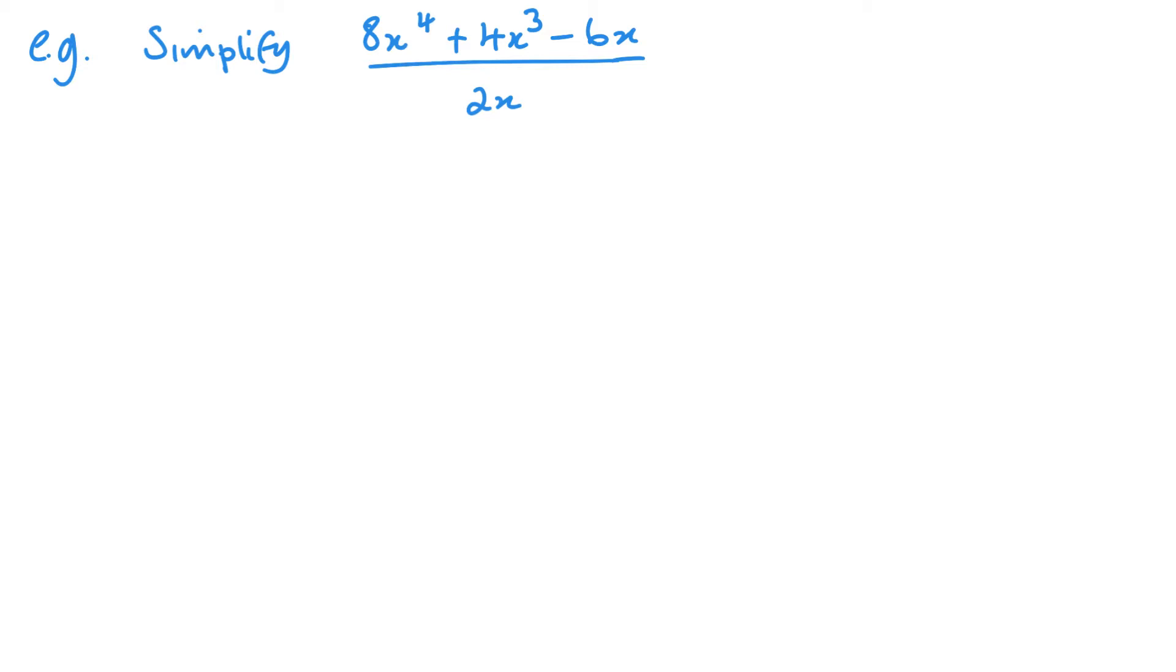So we have a question here: 8x to the power 4 plus 4x cubed minus 6x over 2x. I can see straight away on the top that I can take an x outside of everything, and also 2 goes into each of my coefficients, so I can take a 2 outside. That would leave me with 4x cubed plus 2x squared minus 3. Now that it's outside, you can quite easily see I can cancel the 2s and I can cancel the xs, leaving me with 4x cubed plus 2x squared minus 3.